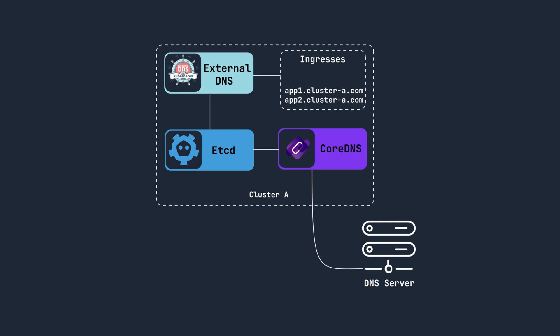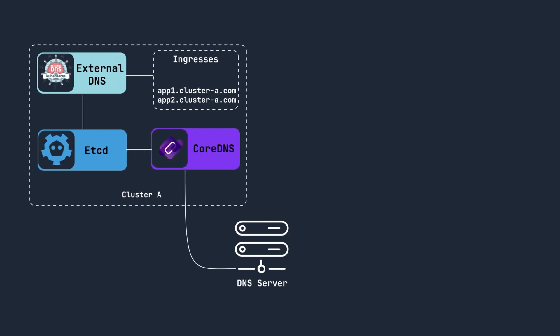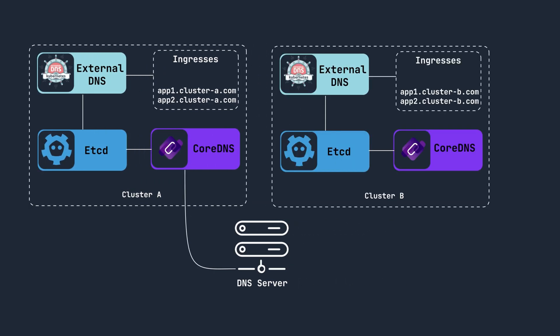This entire setup eliminates the need for constantly creating or removing records manually in our main DNS servers, since this is now done automatically by External DNS. We of course need to deploy this same setup in all the clusters in the organization to enable DNS resolution for domains in those clusters as well. The respective CoreDNS instances in each cluster can be queried by the main DNS servers, which effectively means all clusters will have access to all DNS information in the entire network. In this way, we have successfully set up a true multi-cluster DNS setup which will maintain near real-time service discovery and connectivity between clusters.